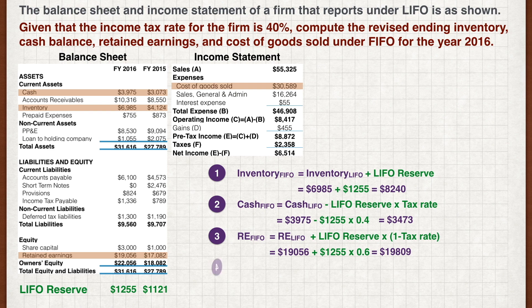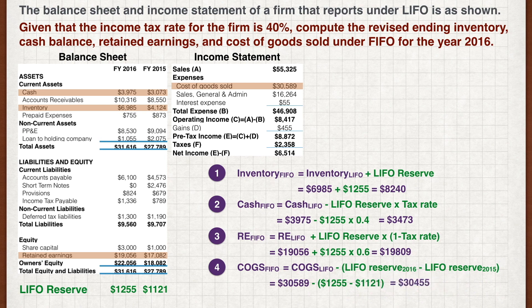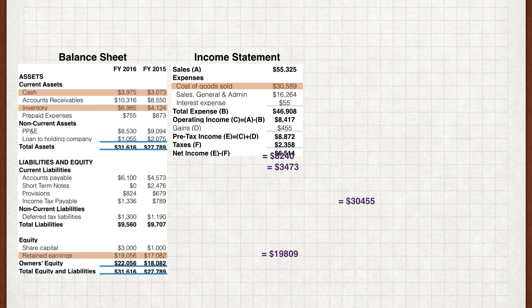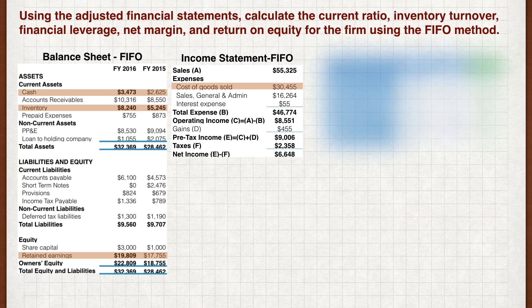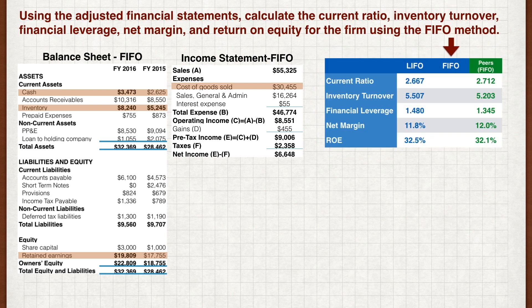And finally, in the income statement, the FIFO cost of goods sold is the LIFO cost of goods sold minus the change in LIFO reserve. Plug in the figures, and we get the answer of $30,455. Having the adjusted figures for inventory, cash, retained earnings, and cost of goods sold, an analyst can apply these adjusted figures into the statements to get the FIFO balance sheet and FIFO income statement.